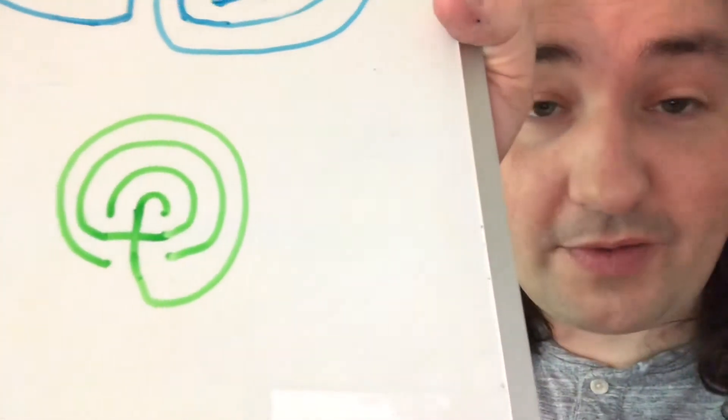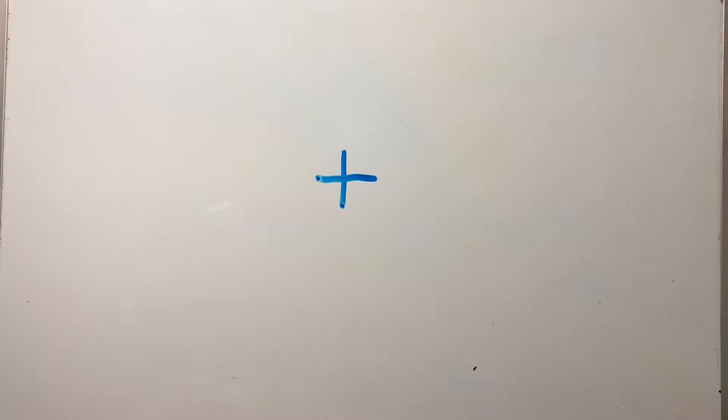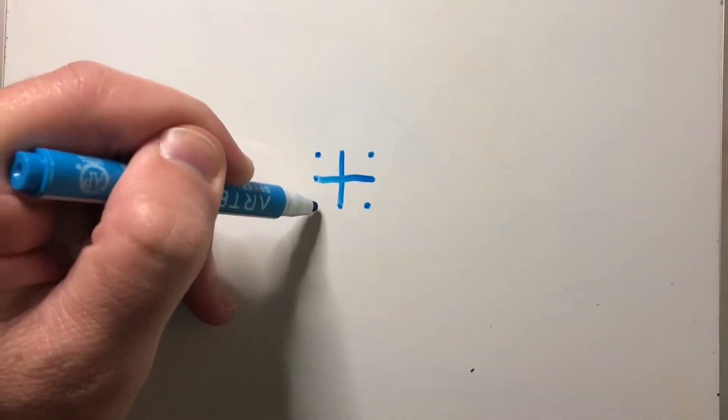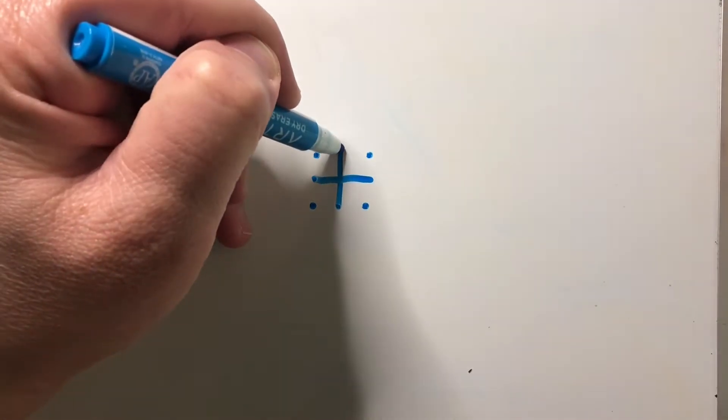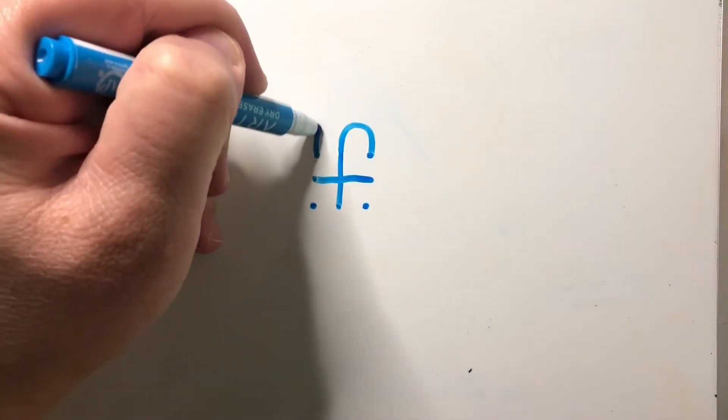We're going to start off with a simple labyrinth pattern. Start with a plus sign and four dots, like you're making a square. Watch carefully how I connect the dots and the lines together.